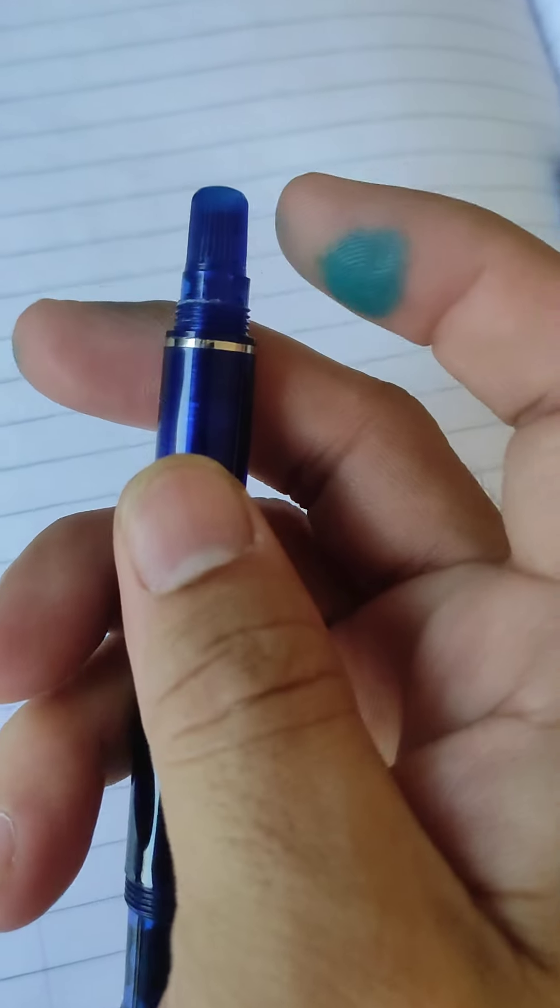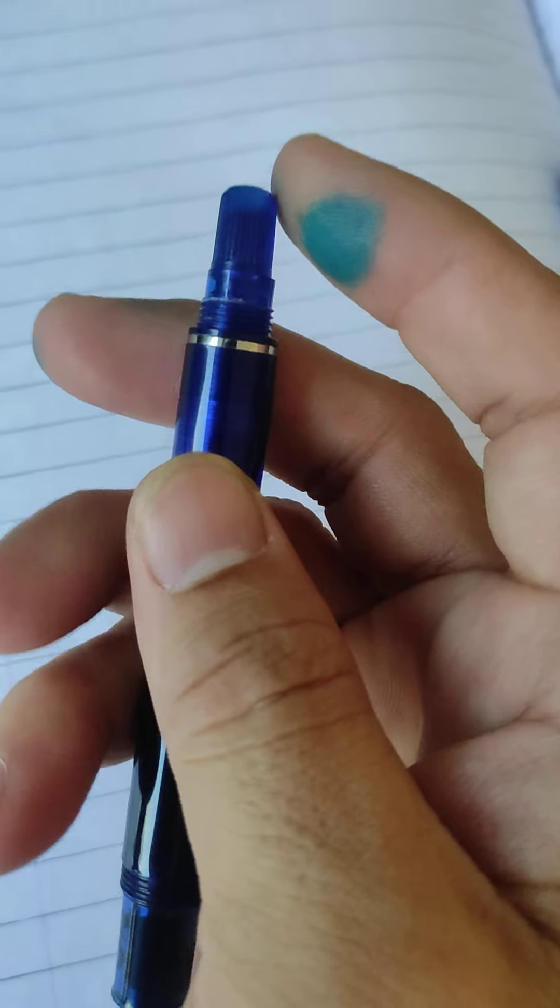And then we have to rotate this to ink it up. So this is a piston filler, you can see the piston here. I already inked it up so now we will have some ink sample and early writing.